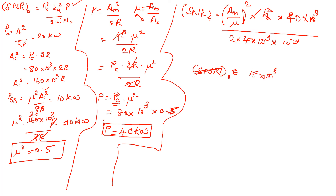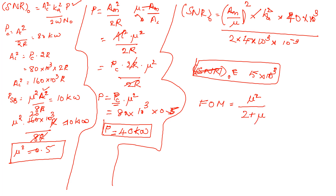The figure of merit formula for AM is given by mu square divided by 2 plus mu square. Substituting mu square equal to 0.5: 0.5 divided by 2 plus 0.5, which gives the figure of merit equal to 0.2.